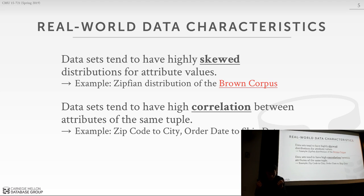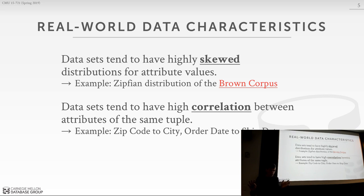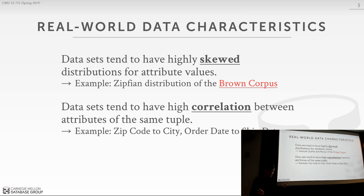Before talking about how to compress, we should discuss why we can compress. In the worst case, if every value for every attribute in every tuple is completely random bits, no compression scheme can help. But the data we store in structured databases is actually highly skewed and amenable to compression. Across all values in a single column, the distribution is highly skewed.